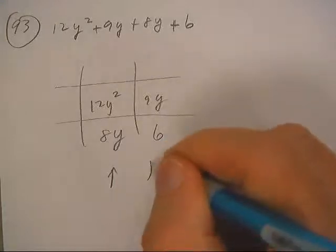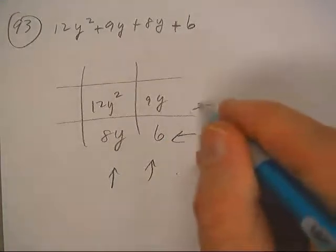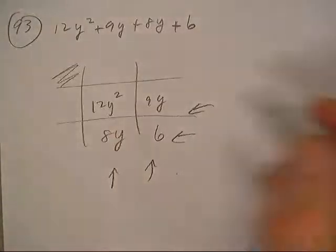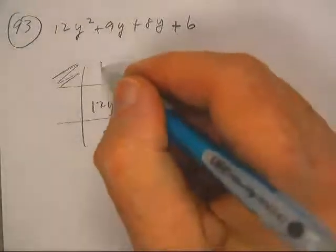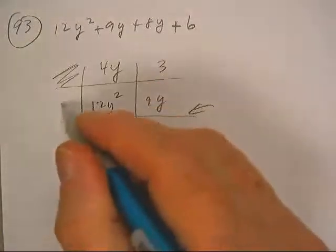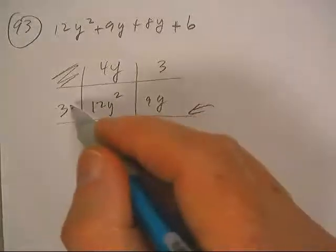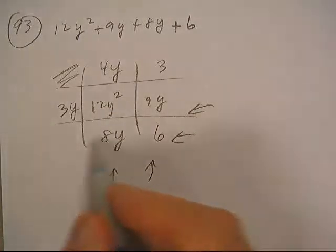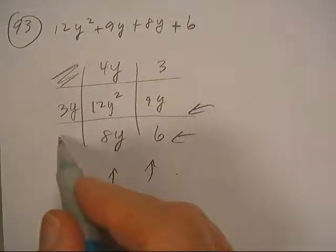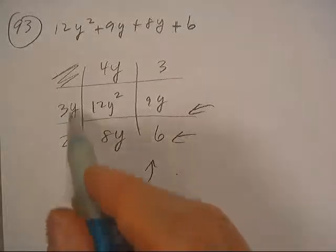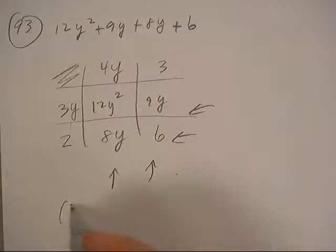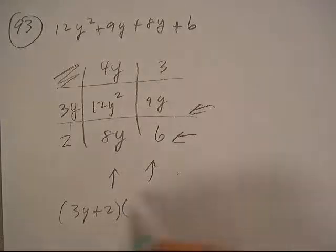...and then I did common factors all four directions: the common factor here is 3, the common factor here is 4y, then 3y, and the common factor going this way is 2. So you would get 3y plus 2, and you would get 4y plus 3.